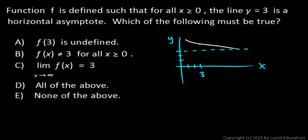There could be a hole in the graph right here, or there could be a vertical asymptote right there. We don't know and it doesn't matter. This fact is unrelated to the value of the function at f equals 3. So choice A may or may not be true. So that's not an answer to our question.